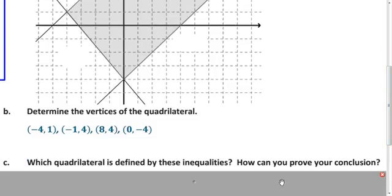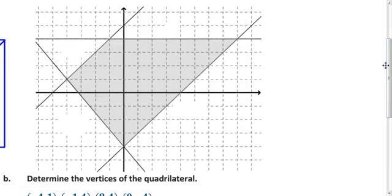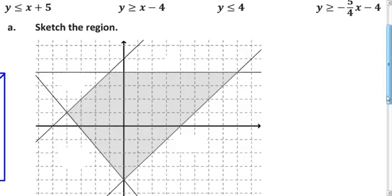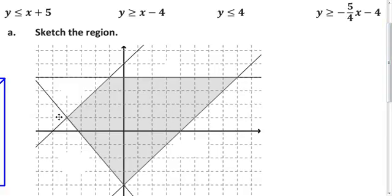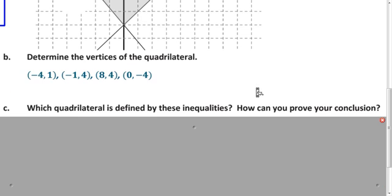So, now we want to figure out what type of quadrilateral we have and how we can prove that. So, what's the special name for this type of quadrilateral? Well, it has two parallel sides. This side is what we get when we graph y is less than or equal to x plus 5, so the slope is 1. And this one is what we get when we graph y is greater than or equal to x minus 4. So, both slopes are 1, so they're parallel. So, it must be a trapezoid.